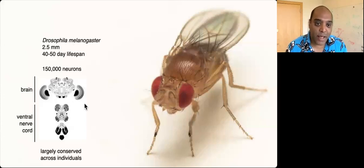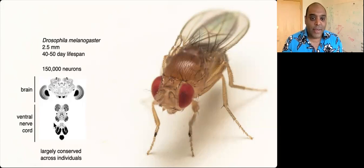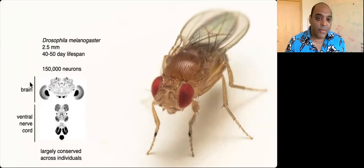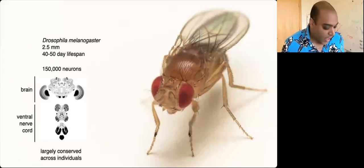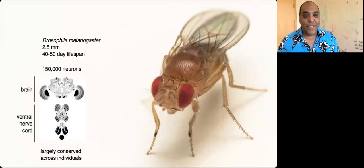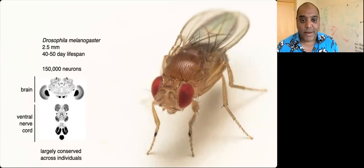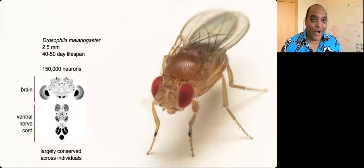Princeton will be publishing a reconstruction of the connectome of the central brain in the next few months, and in the last few weeks papers have been released showing the connectivity of the ventral nerve cord. We now know there are about 133,000 neurons in the central brain and about 20,000 in the ventral nerve cord. We believe the connectivity is also largely conserved across individuals. This is a heroic project involving probably tens of millions of dollars and hundreds of man-days of work, but we now have unprecedented knowledge about the anatomy of this nervous system.